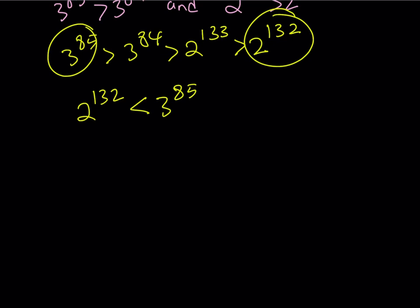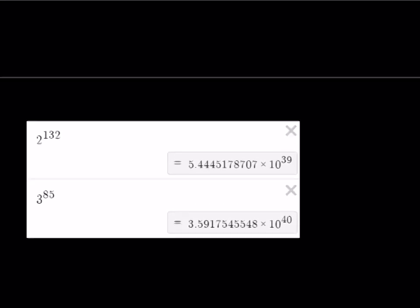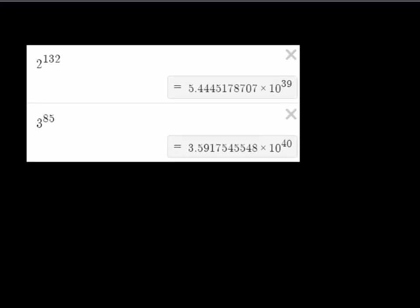And this brings us to the numerical values. Not to the end of the video yet, because I'd like to show you what those numbers look like. And you can verify that numerically as well. So 2 to the power 132 is approximately 5.44 something times 10 to the power 39. As I said earlier, this number has 40 digits, and 3 to the power 85 is a 41-digit number, which is obviously greater than 2 to the power 132. So this also verifies that the first number, 2 to the power 132, is less than 3 to the power 85.